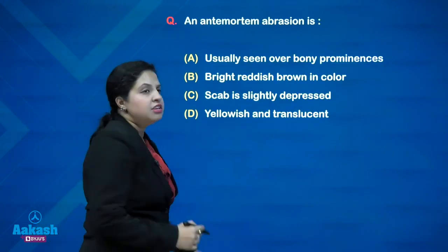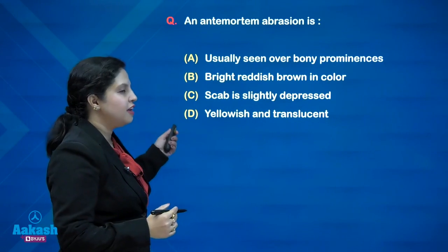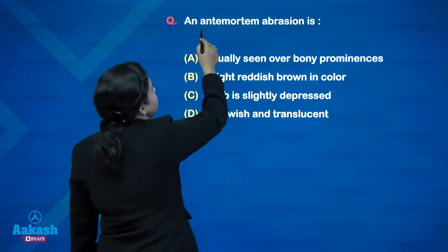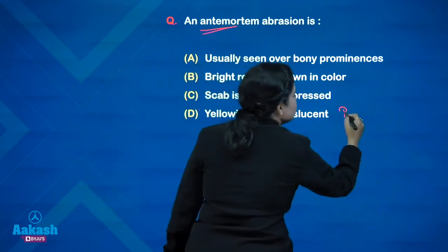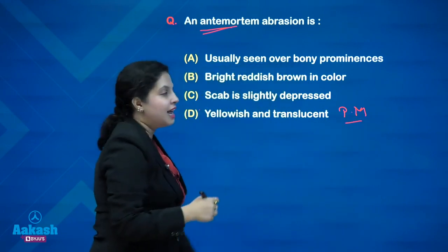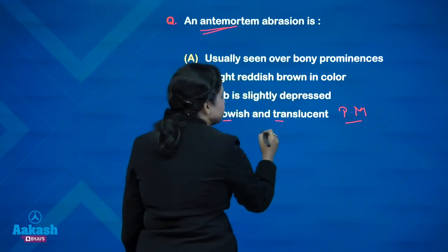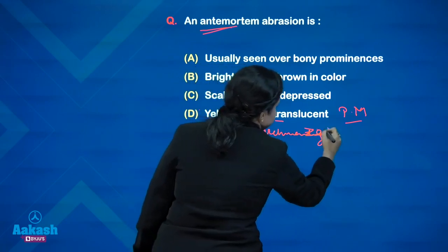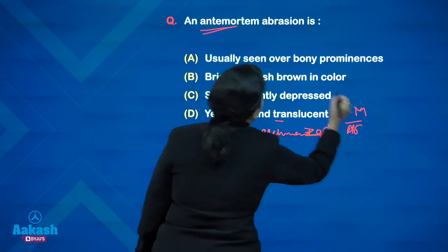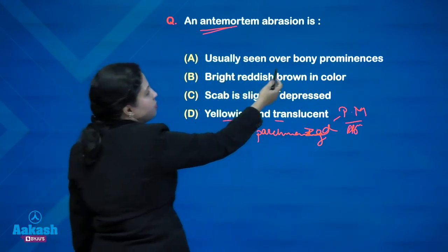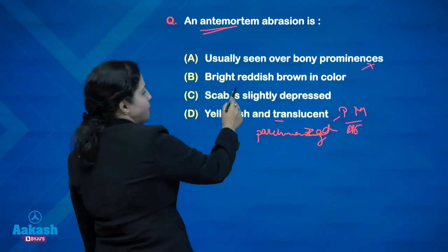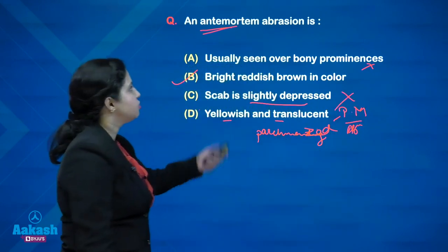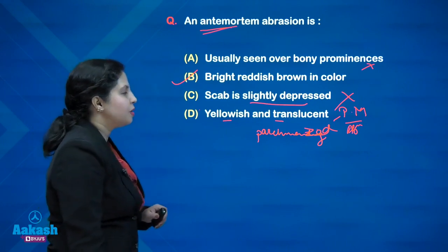Anti-mortem abrasion — these are the types of questions where we are very eager to answer and will likely say yellowish and translucent because we were looking for those words, but we miss 'anti-mortem.' Yellowish, translucent, and parchmentized are the features of post-mortem abrasion. So the answer for anti-mortem abrasion: seen over bony prominence? No, that is post-mortem abrasion. Bright reddish-brown in color? Yes. Scab is slightly depressed? No such thing. The answer to anti-mortem abrasion is bright reddish-brown in color.